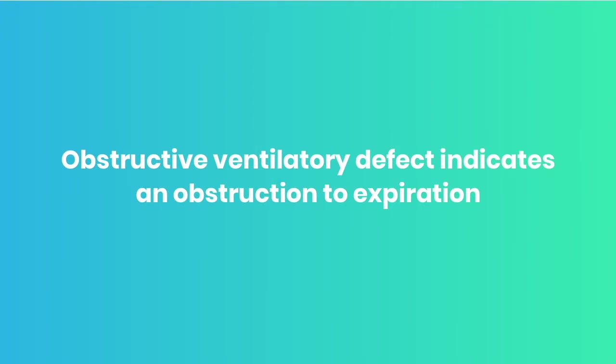Most of the time, if forced vital capacity is reduced, we can assume that there is a restrictive ventilatory defect. More common is an obstructive ventilatory defect, which means that there's airflow obstruction to expiration — something is causing a reduction in flow, slowing down the speed by which we can expire. That might be due to narrowing of the airways such as in asthma or COPD, sometimes due to mucus within the airways, or sometimes if the airways become floppy they can reduce that expiratory flow rate.